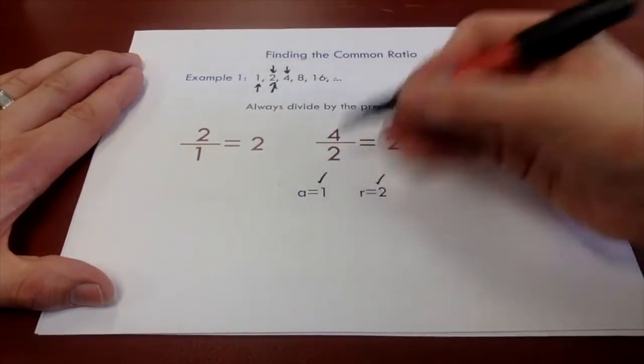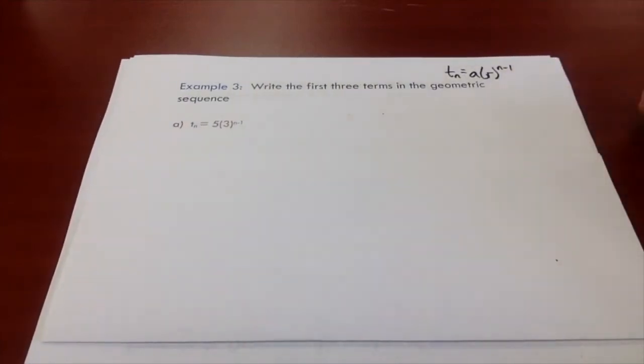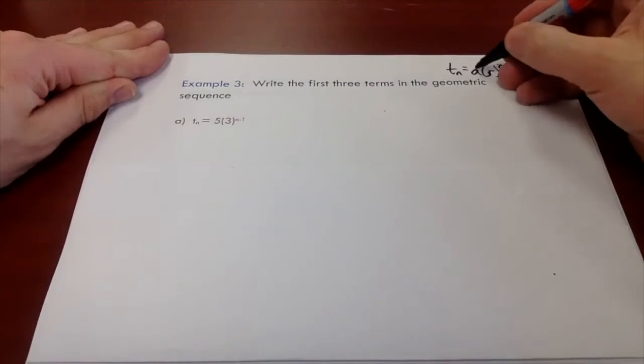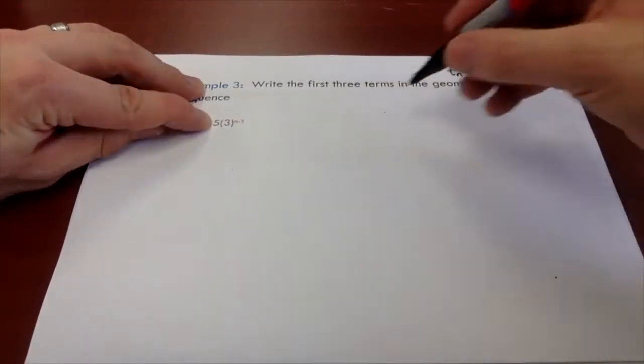Remember a represents our first term, that's one. So I'm telling you right away that this is a geometric sequence. I'm asking for the first three terms. Remember we know that a is our first term. So in this case, we know that five is our first term. So we could just write five.